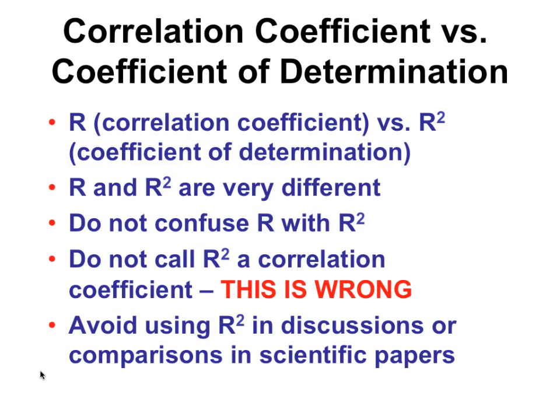There is an issue when using Microsoft Excel — when you use a scatter plot, it calculates not the correlation coefficient but the coefficient of determination, presenting r squared. This is a bug they've never fixed, and it's unfortunately become common use. People quote r squared and call it the correlation coefficient — that's wrong. The way Pearson intended was for people to use the correlation coefficient, so take the square root and quote that.